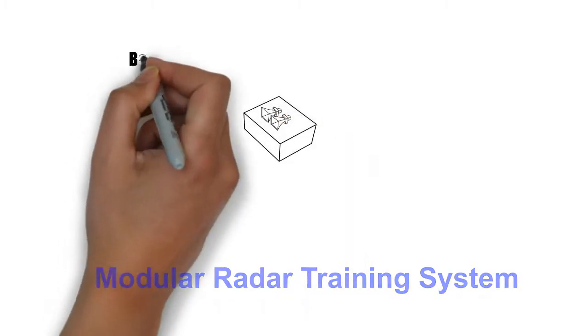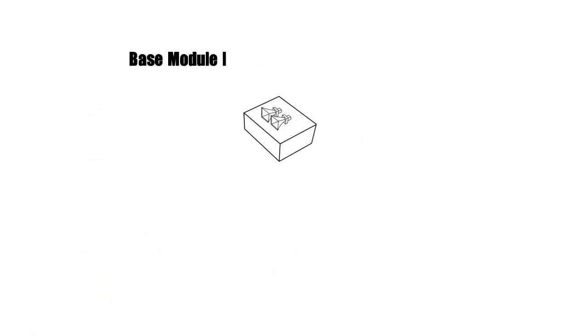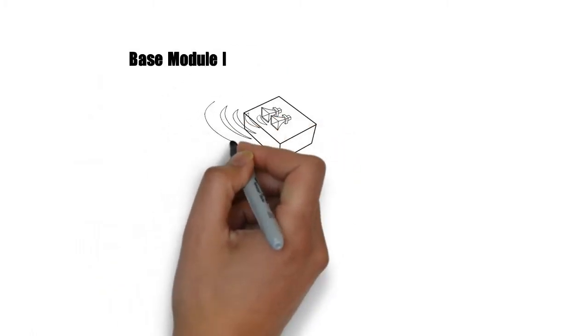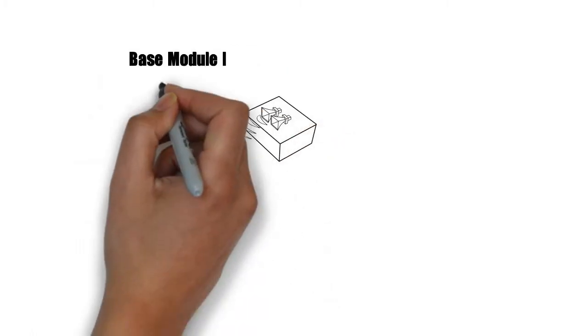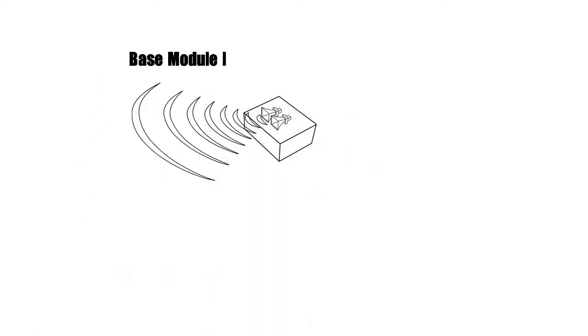This is the Base Module 1, the heart of our SkyRadar Modular Radar Training System. The Base Module has two horn antennas and is ready to operate in constant wave and pulsed mode.